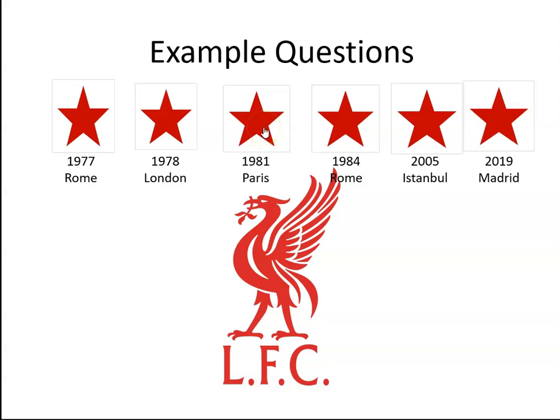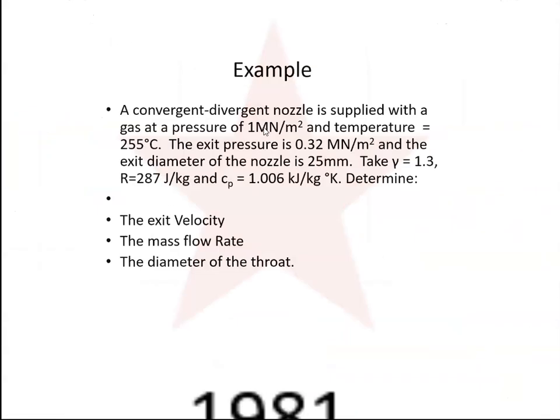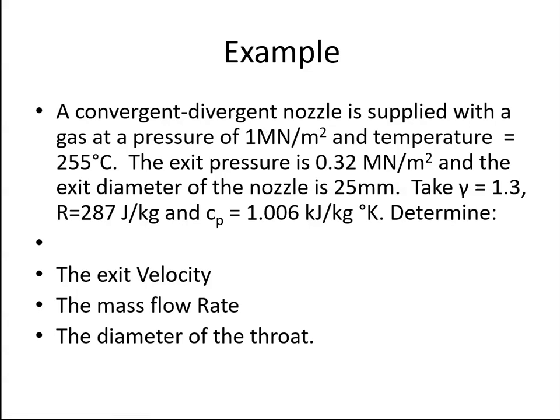And now for example 3. In this question we're told that a convergent-divergent nozzle is supplied with gas at a pressure of 1 MN per meter squared and a temperature of 255 degrees Celsius. The exit pressure is 0.32 MN per meter squared and the exit diameter of the nozzle is 25 mm.